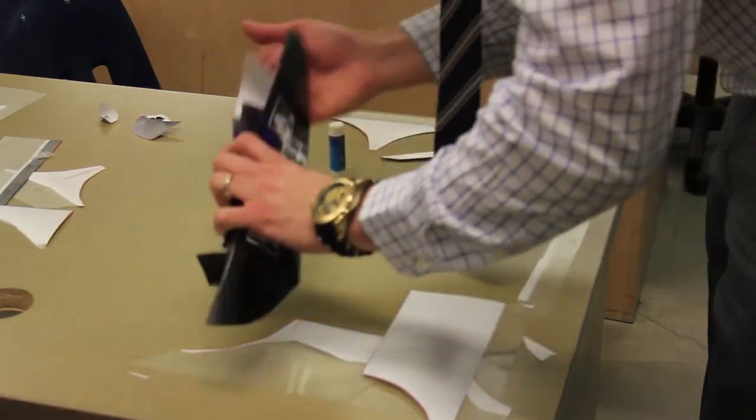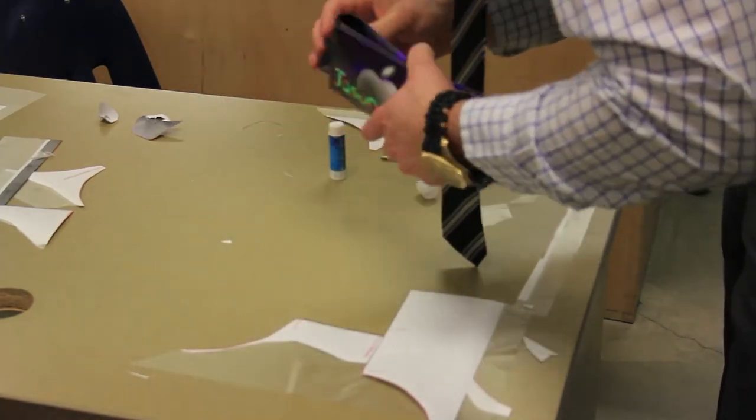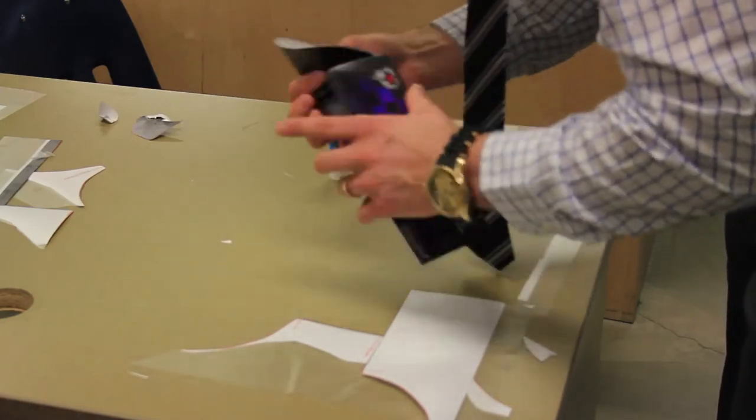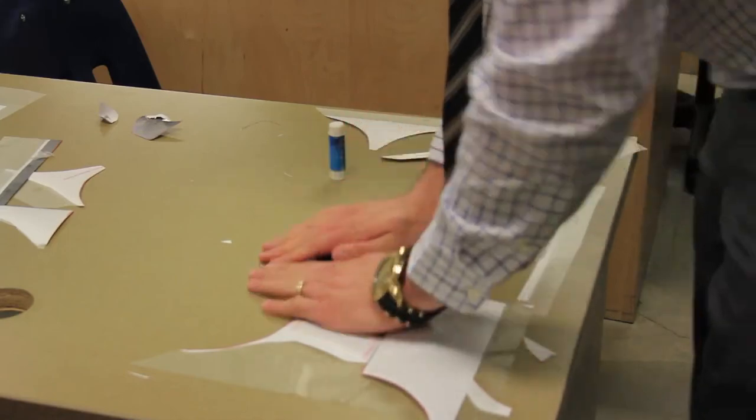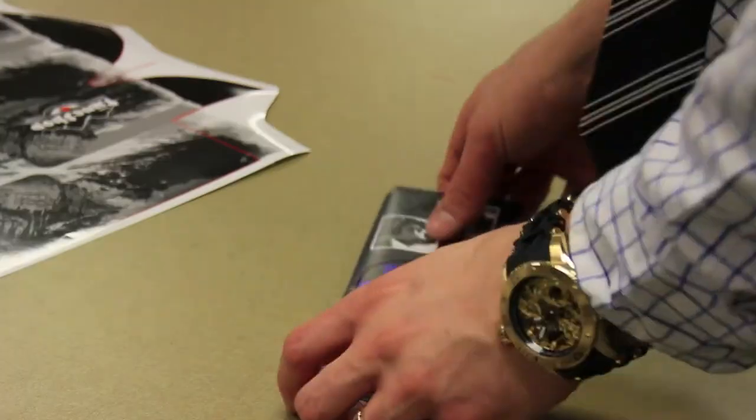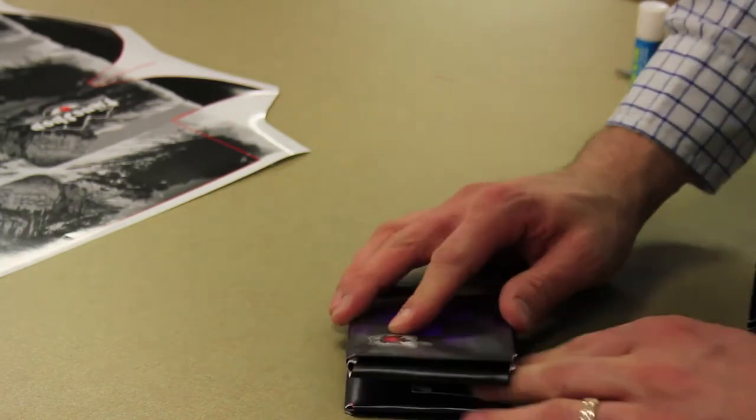Once you've done that then fold the wallet back together, put the side tabs back in and press it down from both sides. Let the glue dry for about an hour so that you don't risk anything shifting and then once you've done that then take the wallet and fold it in half and press it down.